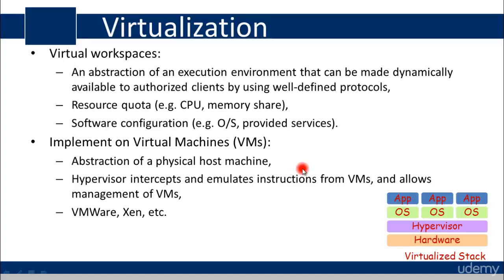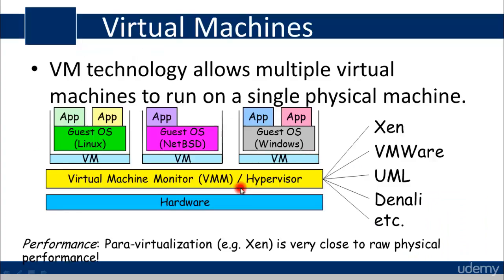Virtualization is basically an abstraction of a physical host machine. A hypervisor intercepts and emulates instructions from VMs and allows management of VMs. Examples include VMware, Xen, and Hyper-V. In virtualization, on a single hypervisor — such as VMware, Xen, or Hyper-V — a small operating system or application runs on the bare metal machine.